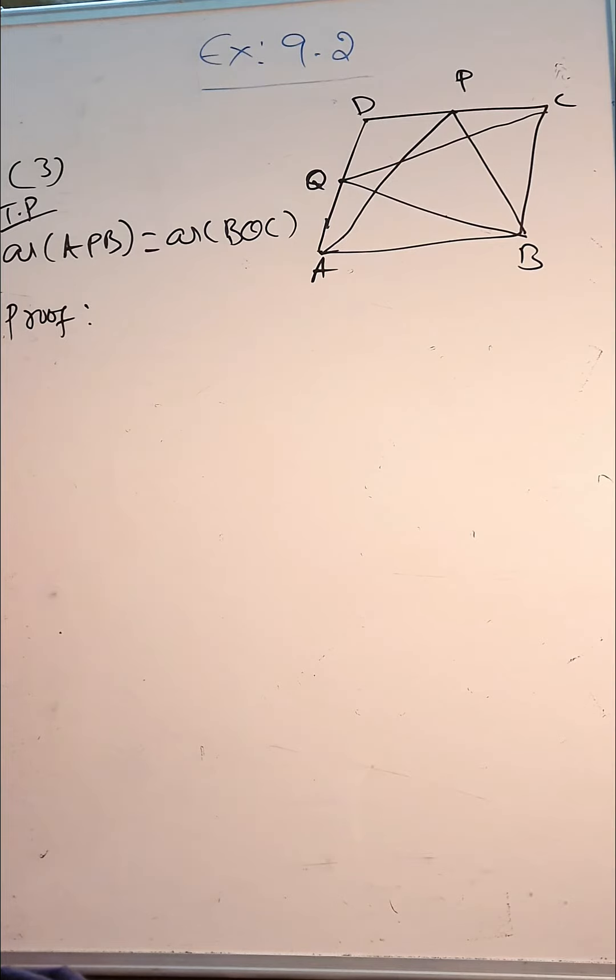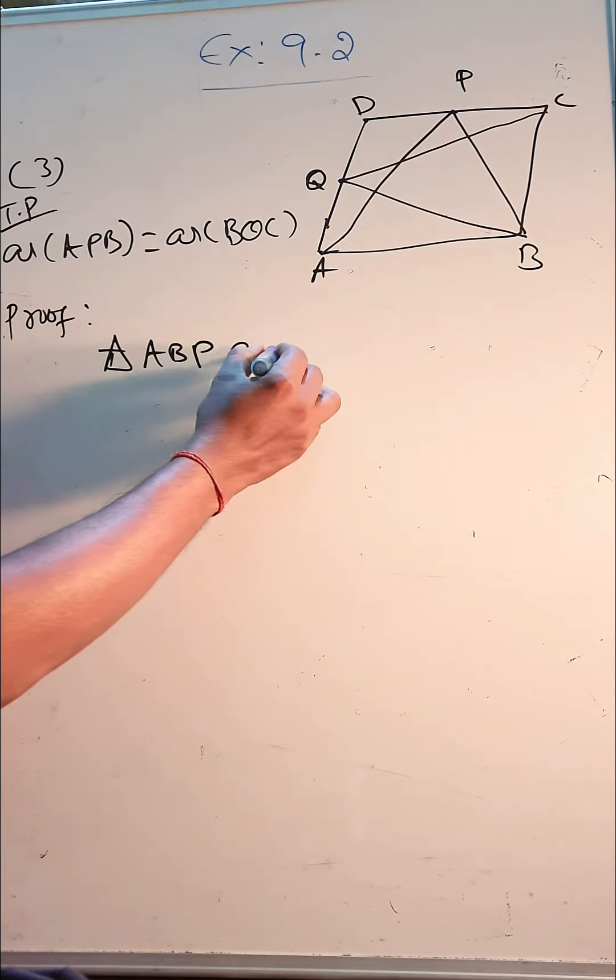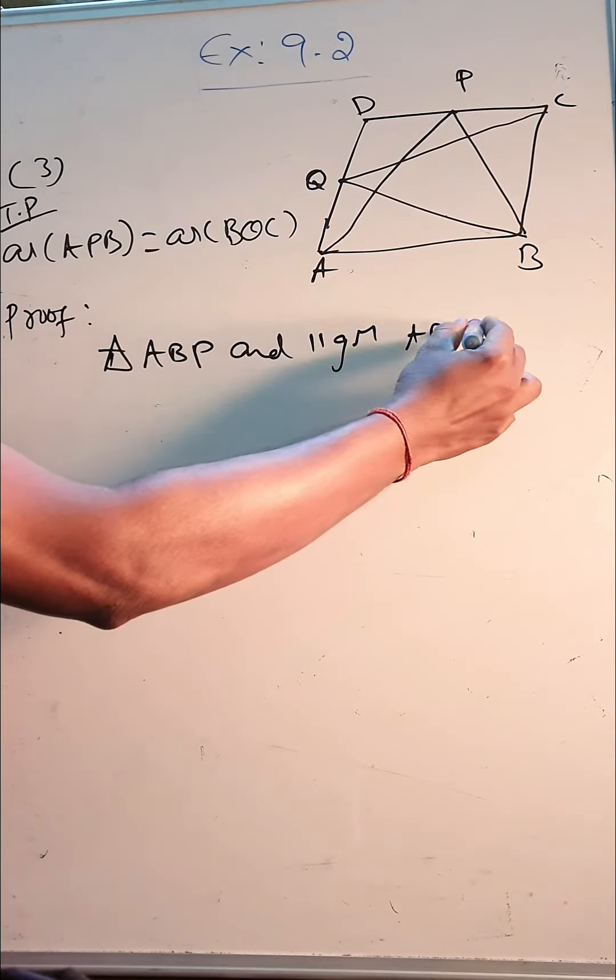So here you can see this triangle, we can just write here, triangle ABP, and parallelogram ABCD lie on the same base.